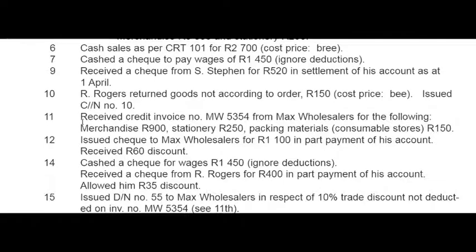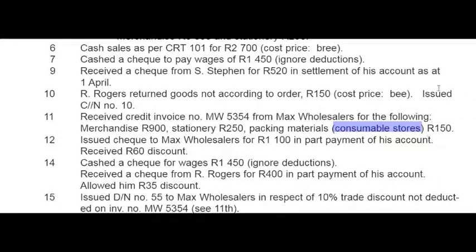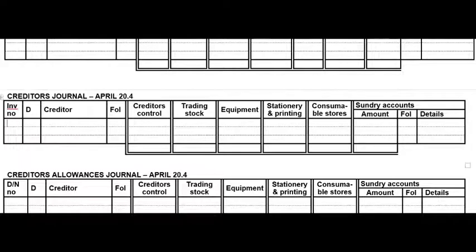On the 11th we received a credit invoice — in other words we bought on credit — so it's a CJ transaction from Max Wholesalers for merchandise, stationery, and packing materials treated as consumable stores. Remember you have to add all of these together to get the net effect on creditors control. We always renumber credit invoices received from creditors, so I renumbered this to number one.